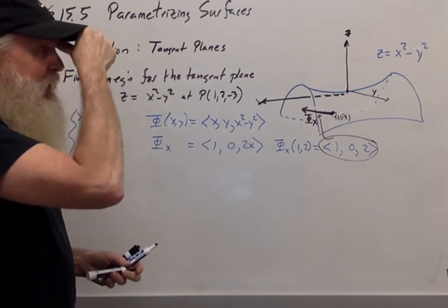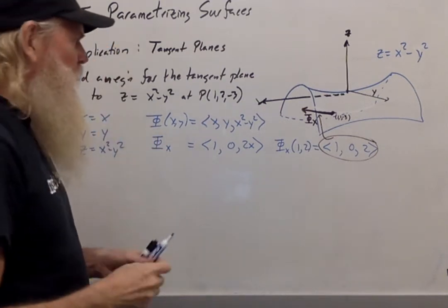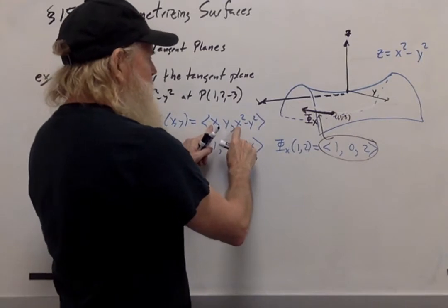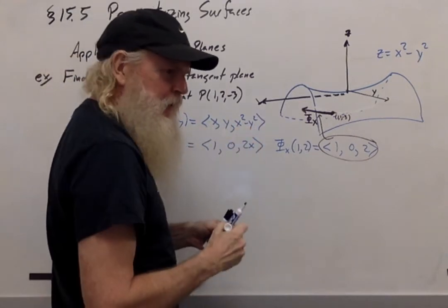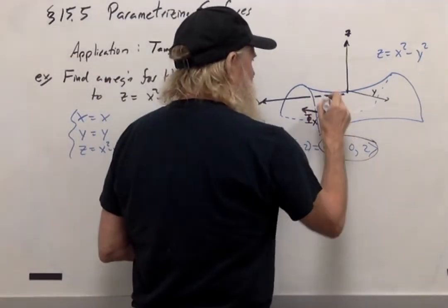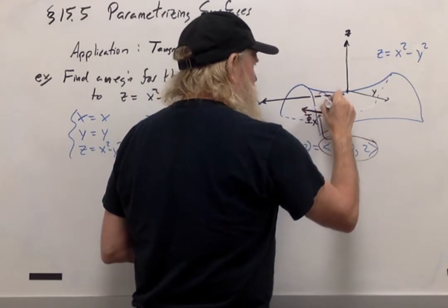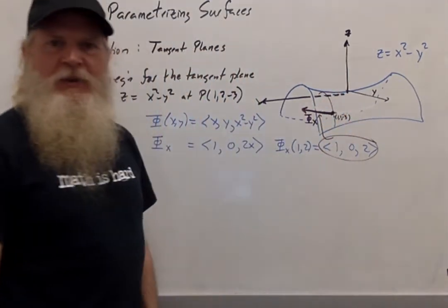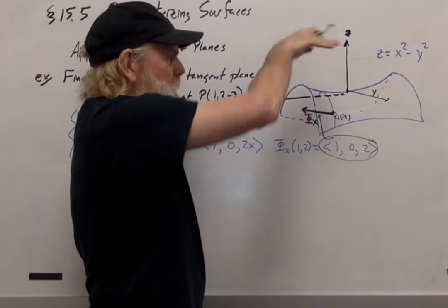Now let's do the same thing with respect to y. If I hold x constant and let y vary, that's going to give me a parabola that loops up over the top of the hyperboloid. So it's going to come over this way.